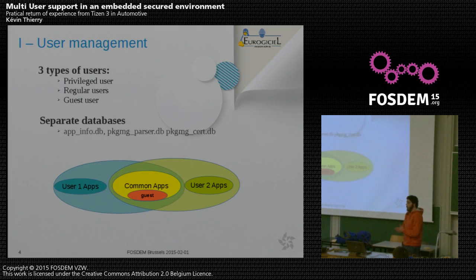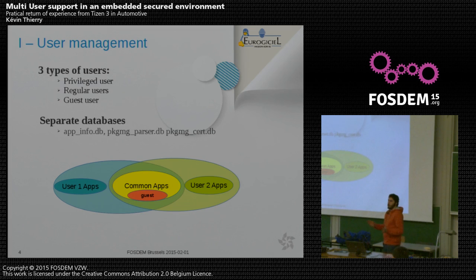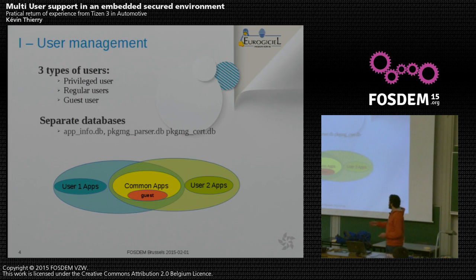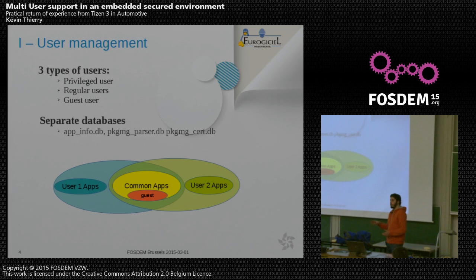Regarding user management, we have three types of users: privileged users, regular users, and guest users. The privileged user is the administrator — able to install common applications, which are accessible to all users. Regular users can also install applications, but those are user-specific; if a user installs an application, only they can use it. Regular users can also use common applications.